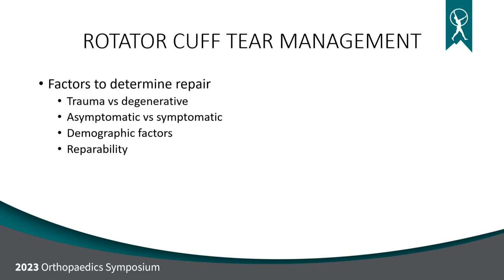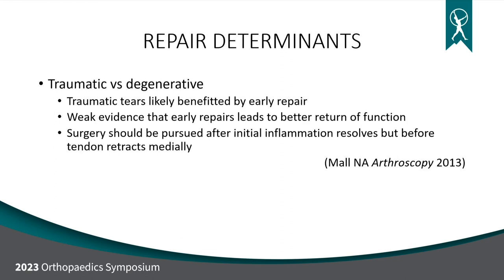Factors determining whether to repair: traumatic versus degenerative, symptomatic versus asymptomatic, patient demographics, and whether the tear is reparable. Traumatic tears we tend to fix early — studies indicate early repair of a traumatic tear may have better functionality and higher likelihood of healing. For young active patients with a traumatic injury and inability to lift the arm, we intervene as soon as inflammation and swelling subside.